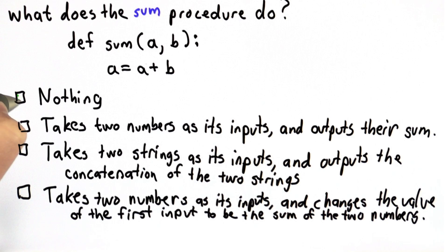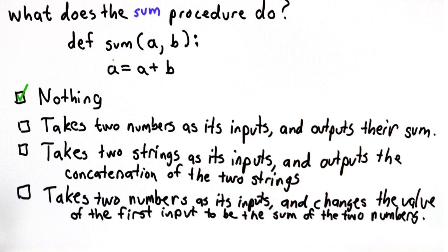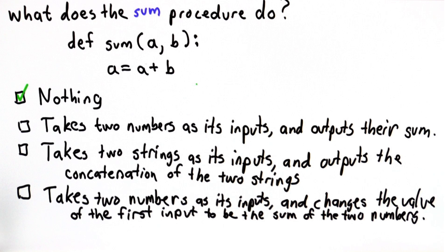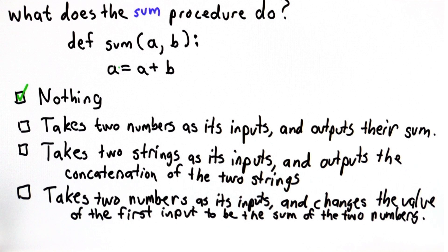So the answer is it really does nothing. It'll make the computer do some work when we call sum, but there's no good reason to ever call this procedure. It doesn't have a return, so it doesn't produce any output. And it doesn't actually modify the value of the first input in any way that's visible to the caller. It does modify the value of a inside sum, but the caller can't actually see that.